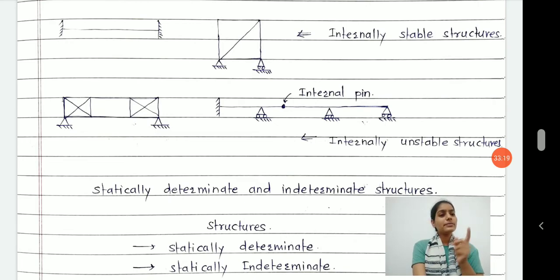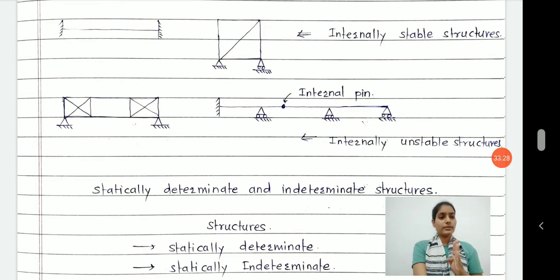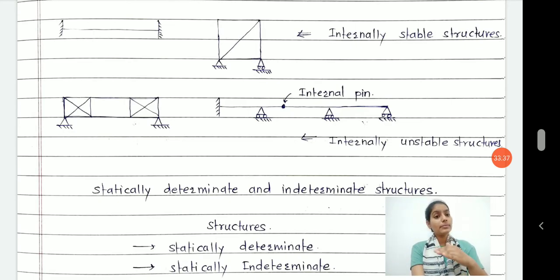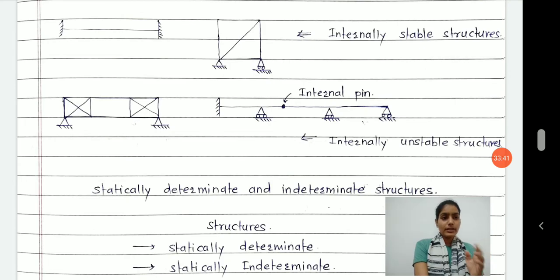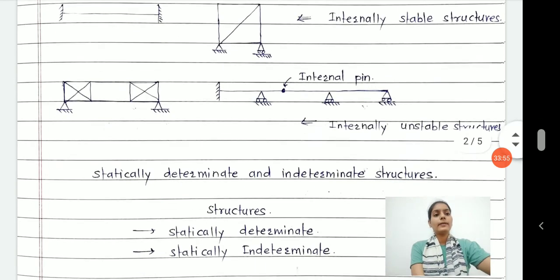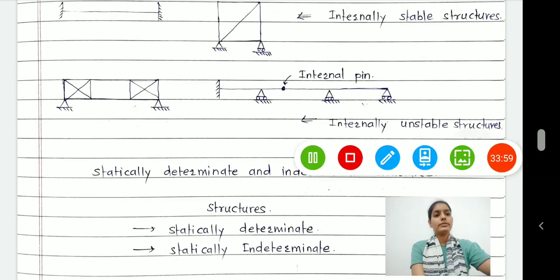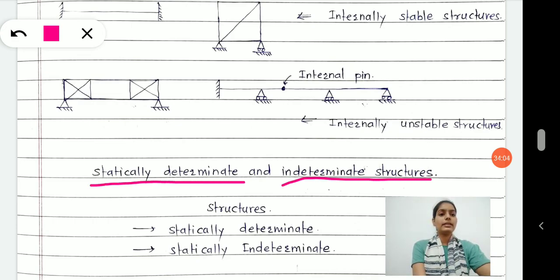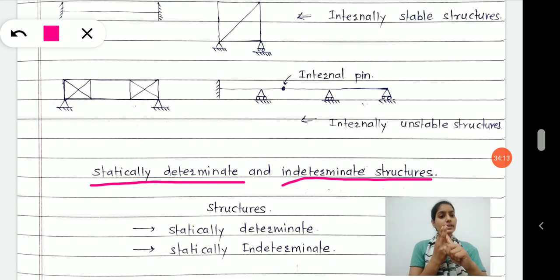If you provide internal pins, it makes the structure unstable but makes it determinate. Instability can be due to internal forces, internal members or joints, or due to external supports. In the next part, we will learn static determinate and indeterminate structures. Basically, structures are classified into two categories: statically determinate and statically indeterminate. How structures are classified into these two categories is what we'll cover in the coming classes. Thank you so much.